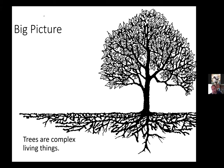One quibble with this particular drawing is the taproot it shows. It's not really relevant to what we're going to talk about, but it's a good trivia fact: in landscape settings, almost no trees develop taproots. It's just not really a thing. Other than that, this is a pretty good drawing of what a tree might look like.